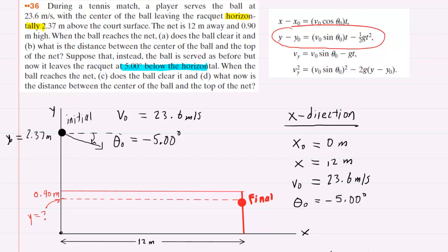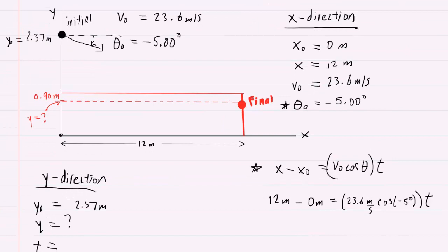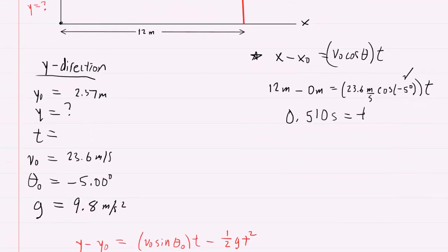In the x-direction, we list all the same information but with the launch angle changed to negative 5 degrees. Using the same x-direction equation as before with negative 5 degrees plugged in, we solve in the same manner and find the time is 0.510 seconds — slightly different from before. Moving to the y-direction, we fill in the known information again with the launch angle changed to negative 5 degrees and the new time of 0.510 seconds.